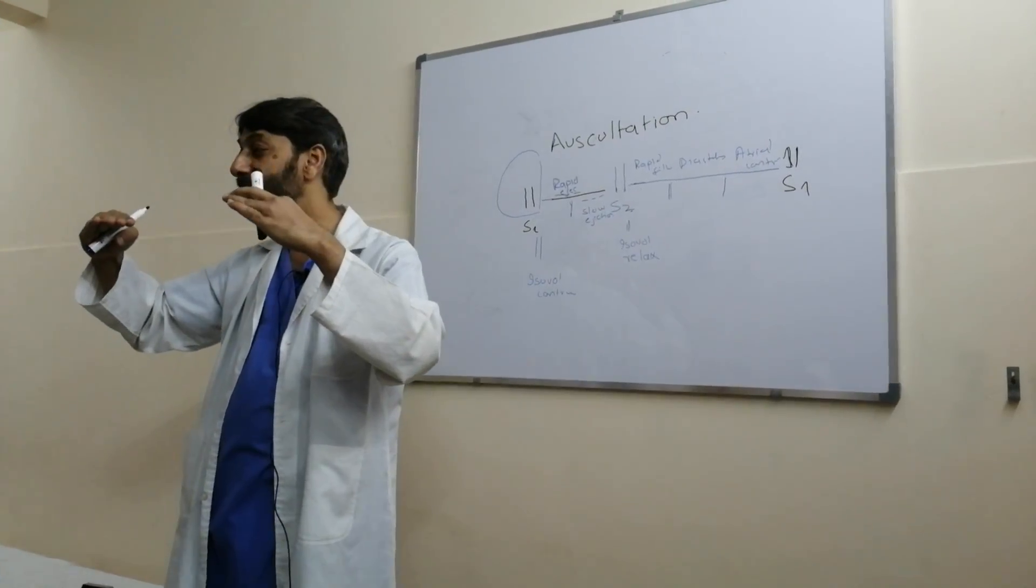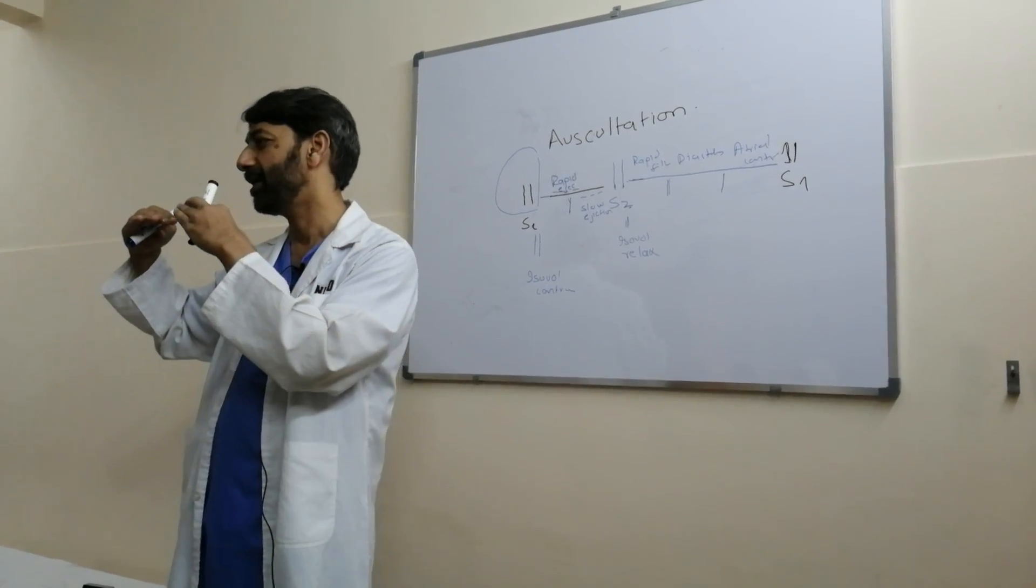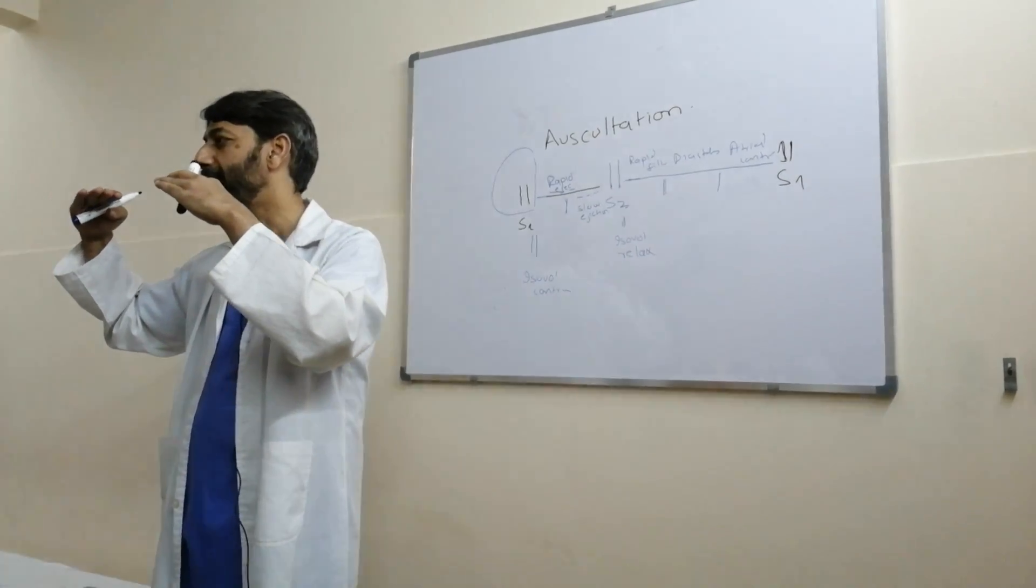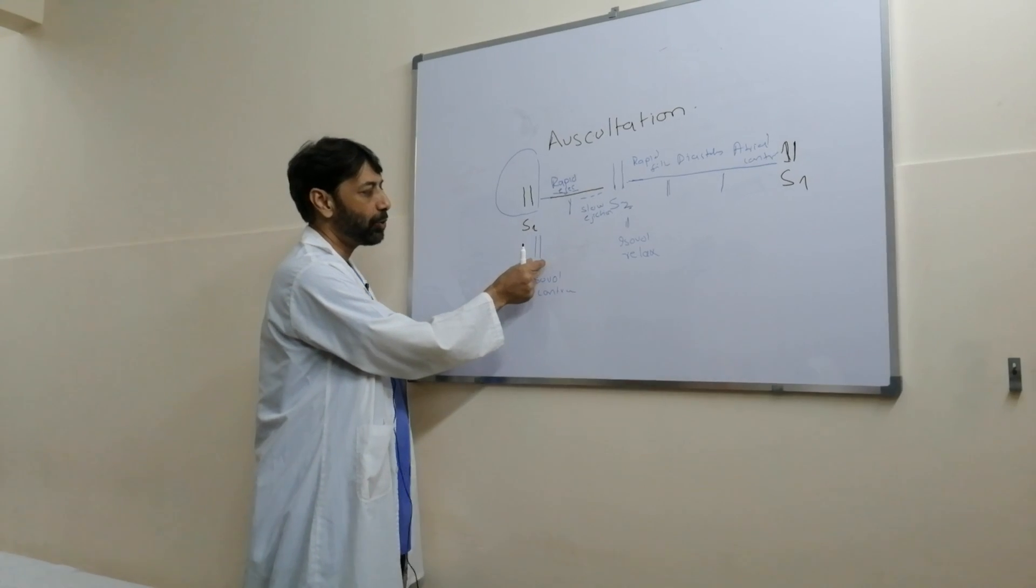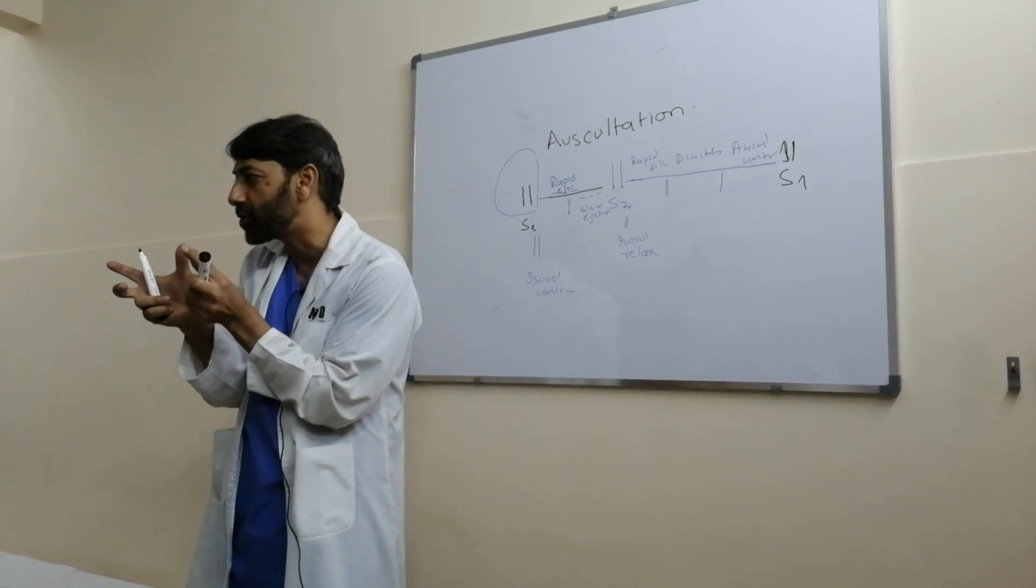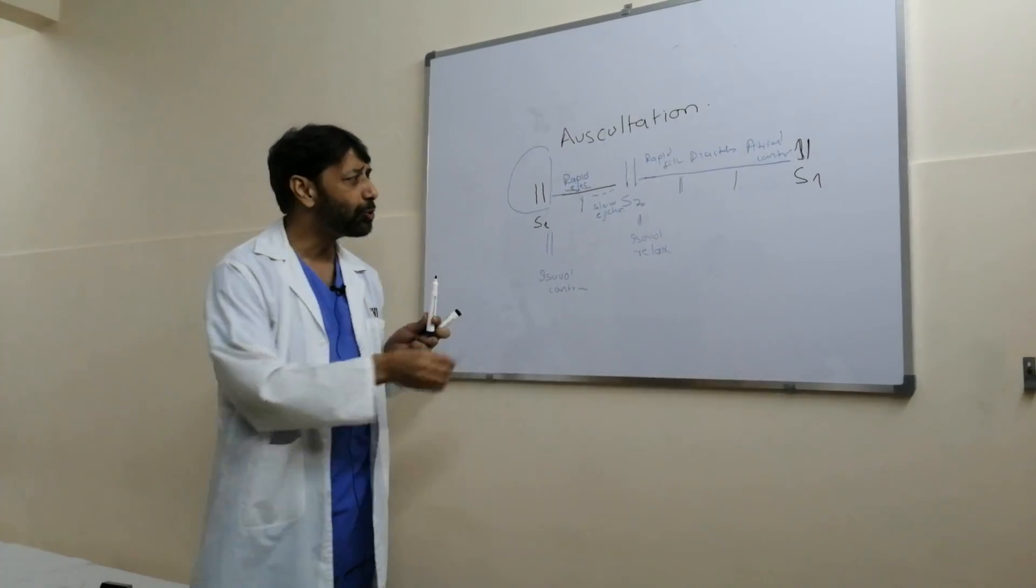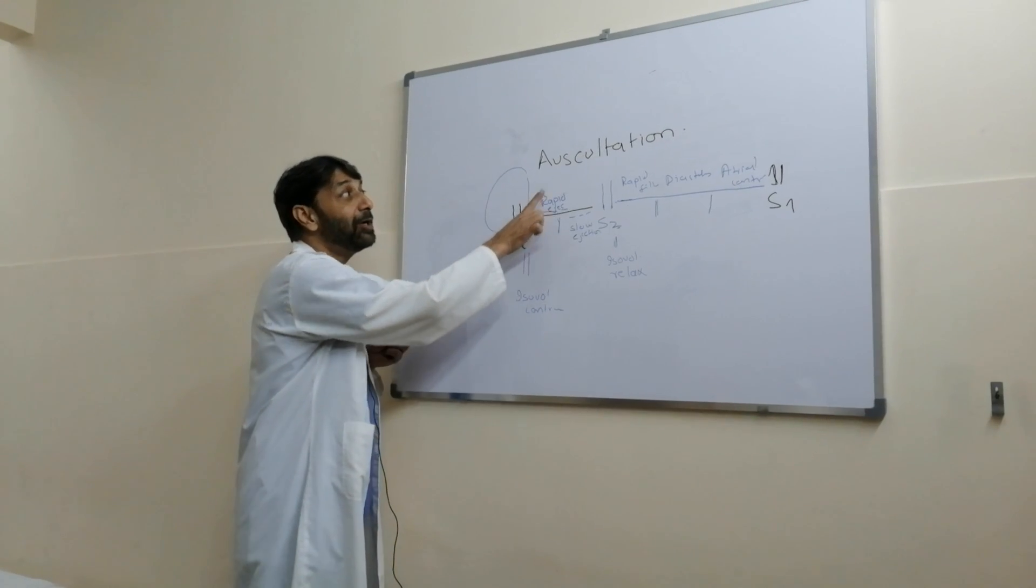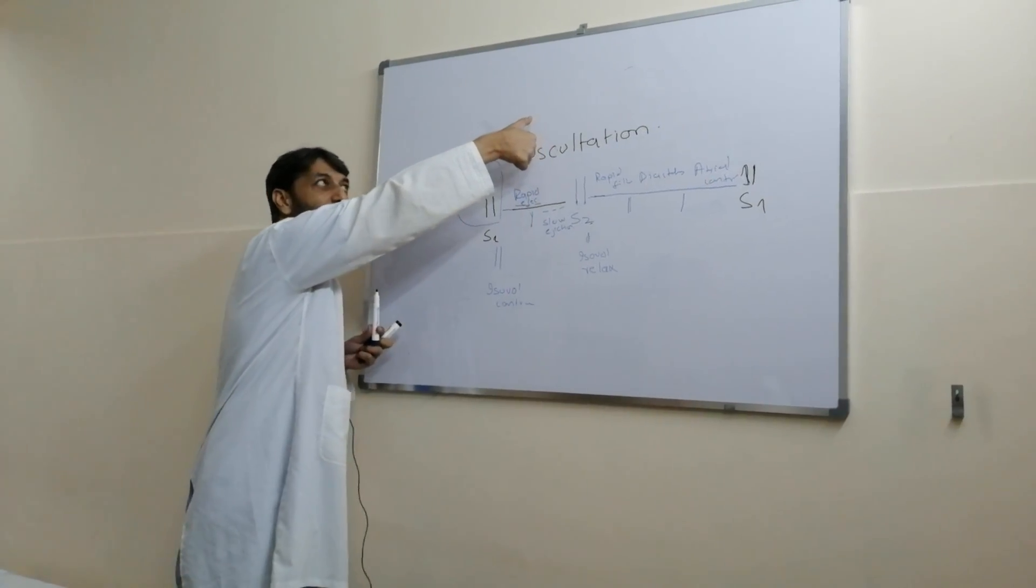Diastole completed. After atrial contraction, both the tricuspid and mitral valve close and produce a sound, first heart sound. After that you have a period of isovolumic contraction within LV and RV. So there is a phase before you palpate the pulse.